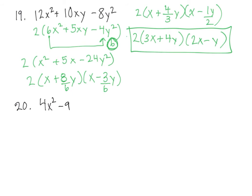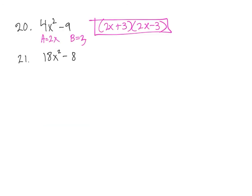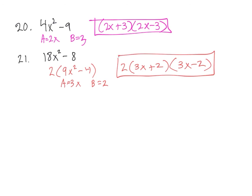Problem 20: finally, an easy one. This is the difference of the squares. So my a is 2x and my b is 3. So we get 2x plus 3, 2x minus 3. Let's look at 21. Problem 21 is actually pretty similar to 20 — the only difference is there is a common factor first. 18 and 8 have a common factor of 2. So that gives me 9x squared minus 4, with an a of 3x and a b of 2. So my common factor times a plus b, a minus b. There's our factoring.